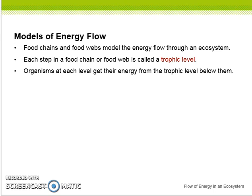Earlier in the video, we talked about there were three different ways that you could model this energy flow through the ecosystem. The first one is going to be a food chain. Food chains and food webs model the energy flow through an ecosystem. Each step in a food chain or a food web is called a trophic level. Organisms at each level get their energy from the trophic level below them.